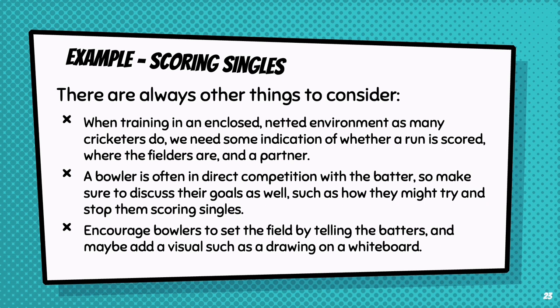Knowing where the fielders are might help the batter inform where they would hit the ball, and we can replicate this in different ways. You might like to use a whiteboard with a field setting drawn, but it may be difficult to compare the ball direction off the bat to a drawing. I personally like to tie a stump to the net, which roughly represents where the fielder would be in the batter's visual field, recreating that feeling of being surrounded by fielders as they might feel in a game.